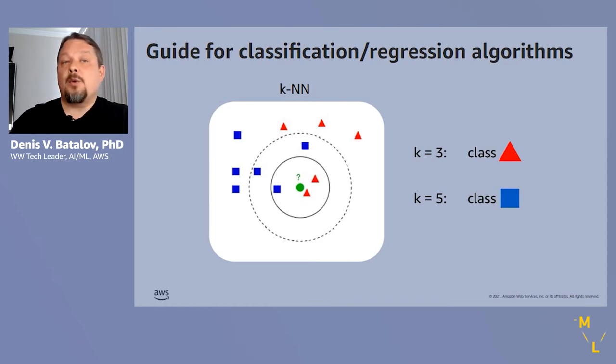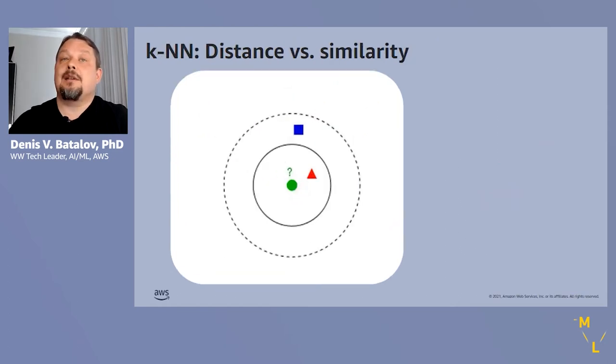If, for example, we pick K equals three, the closest three neighbors consists of two triangles and one square. So the majority class is a red triangle. Now, if we expand K to five neighbors, where the dotted line demarcates the neighborhood, we see that the prediction changes to the blue rectangle. So far, extremely simple, but once we look into the details, you will realize there's plenty of complexity here.